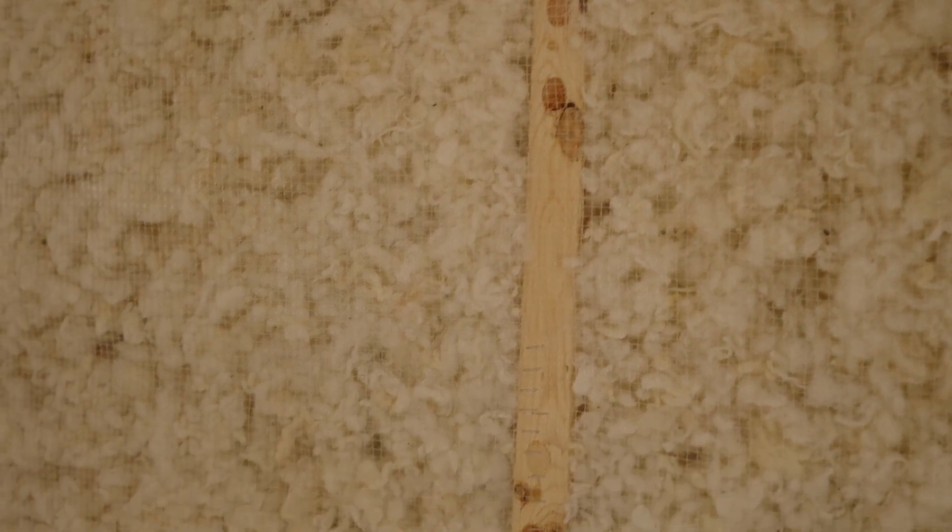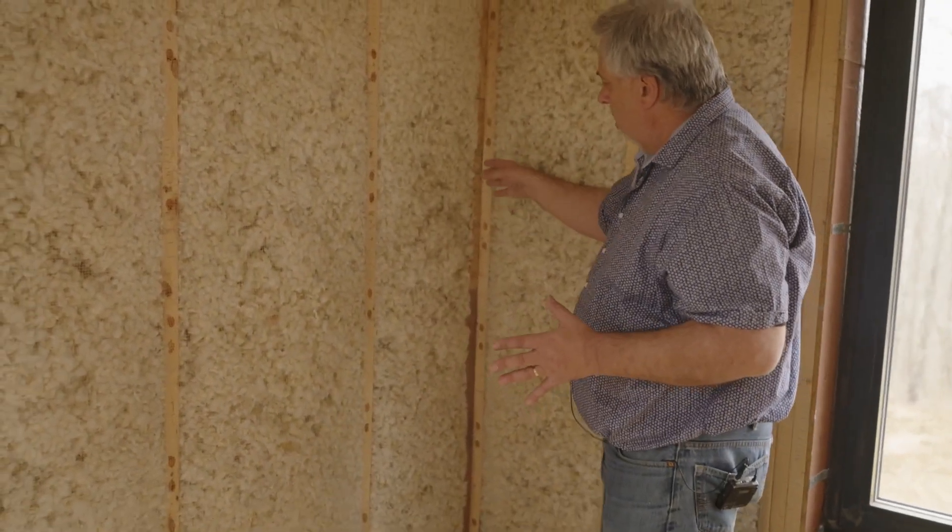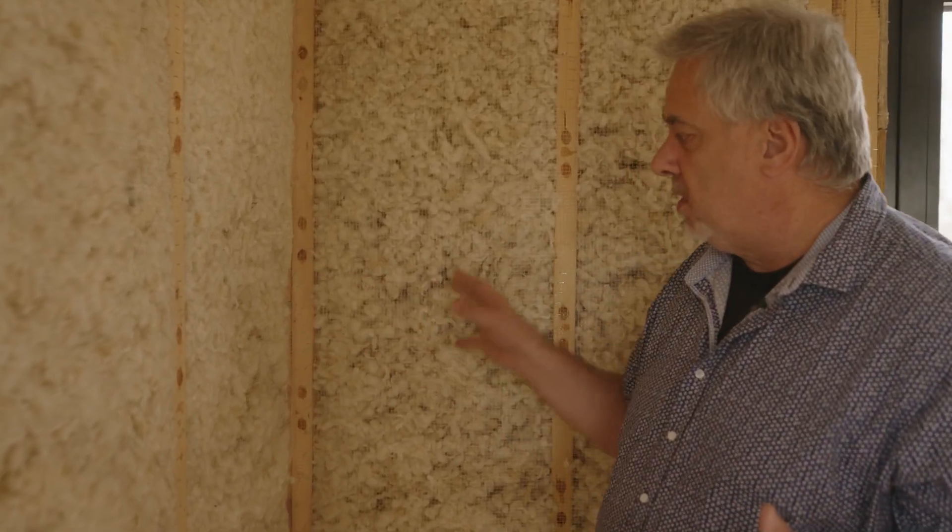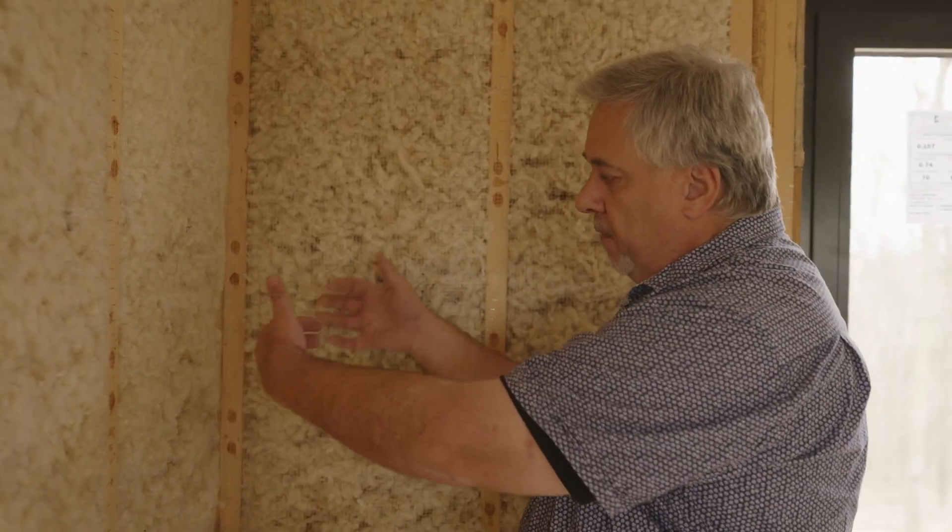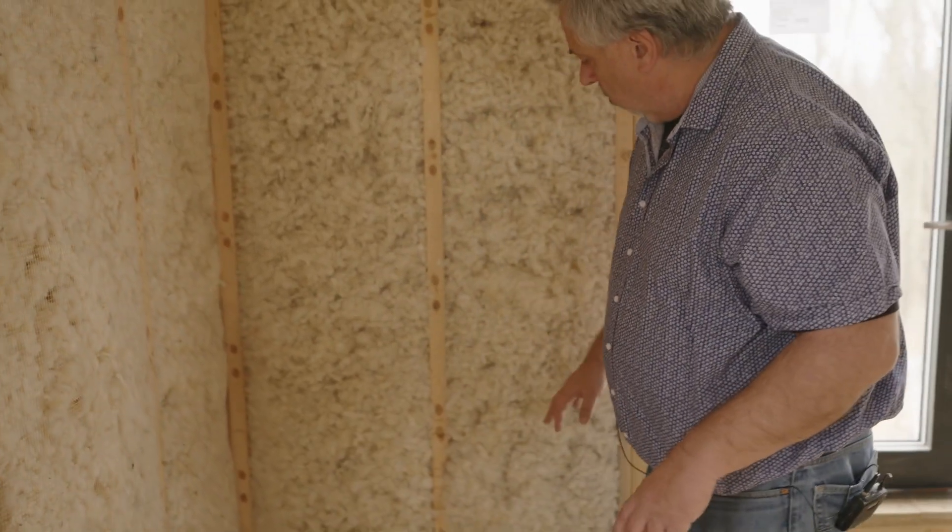And then on the outside of the wall of course we have the Zip-R sheathing out there that's also helping as a thermal break. So in the corner here if you remember we have what I termed the Missouri corner we have our two studs but we have insulation that fully encapsulates that corner so there's not a cold corner out there it's fully insulated with Havelock wool. They did a beautiful job.